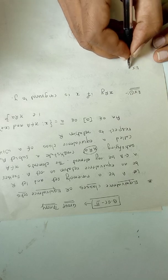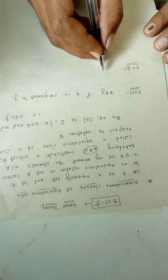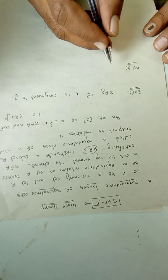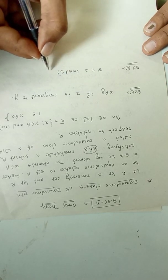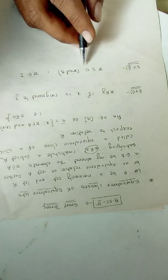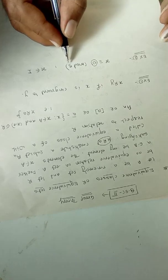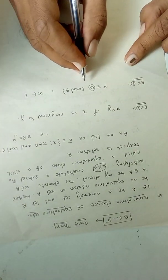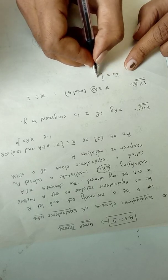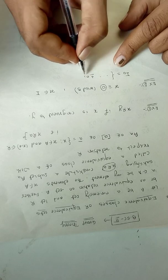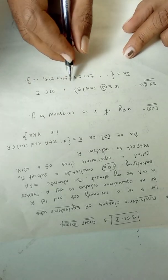Example two: let us determine the equivalence classes in the set of all integers with respect to the equivalence relation congruence modulo 5. x is congruent to 0 modulo 5, where x belongs to the set of integers, means those elements of integers which are divisible by 5 or which leave remainder 0 when divided by 5. So the equivalence class i₀ is {…, ±0, ±5, ±10, ±15, …}.